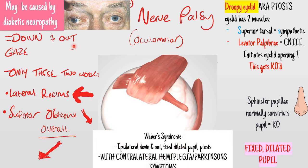If you get these symptoms in combination with something called contralateral hemiplegia - weakness on the opposite side of your body - or contralateral Parkinsonian symptoms like an intention tremor, then you have something called Weber's syndrome. Weber's syndrome: the eye on the side of the stroke is going to be down and out, fixed and dilated. On the other side of your body, you're going to have weakness - hemiplegia - and you might have a tremor.